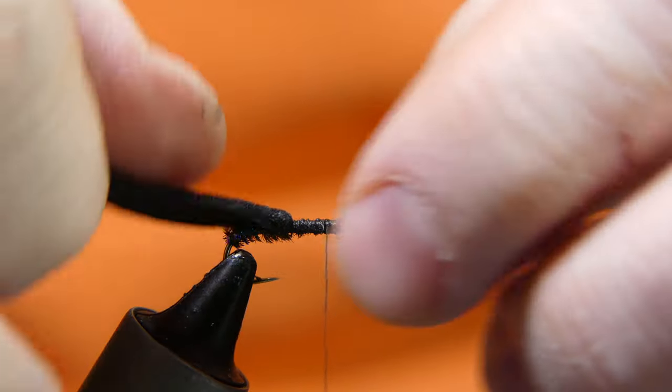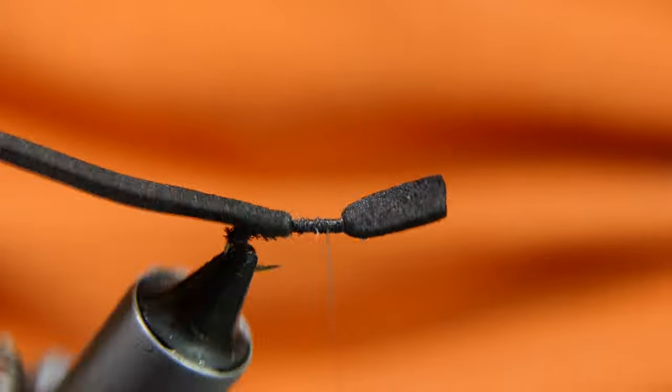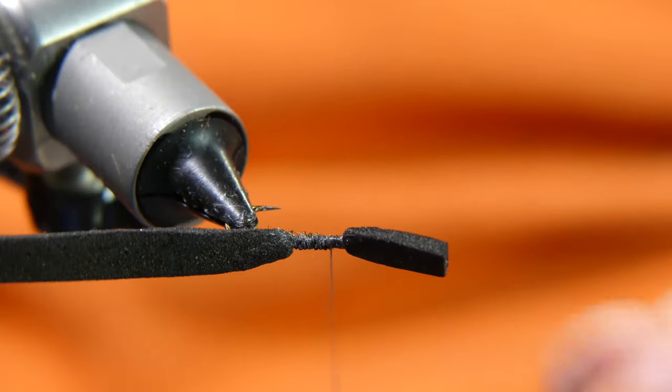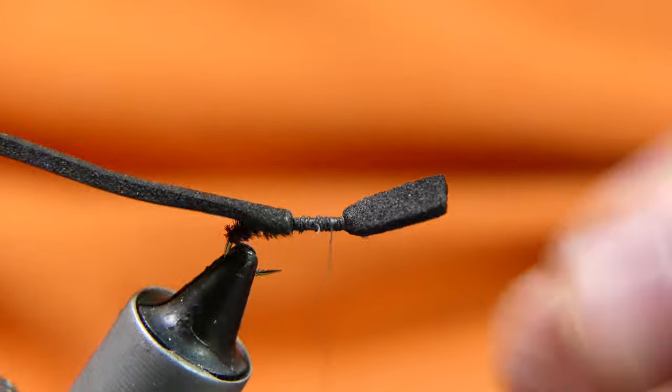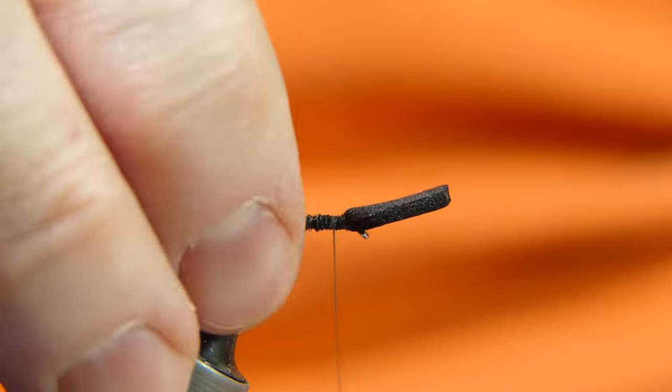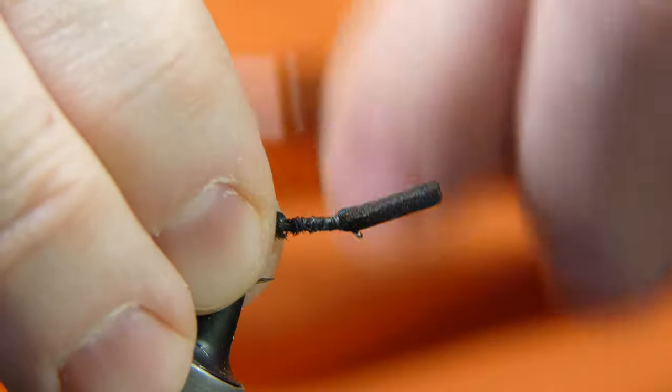Give it a little twist there. How's that look? Looks pretty good. Everything's on top. Bring your thread and park it right in the middle of your thread wrap there.